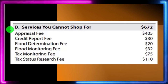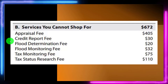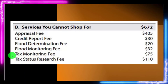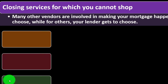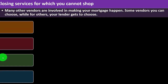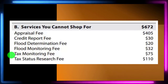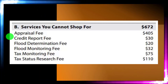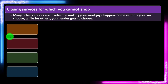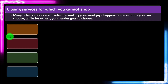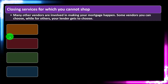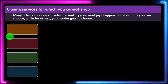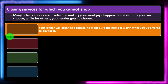Section B covers services you cannot shop for: the appraisal fee, credit report fee, flood determination fee, flood monitoring fee, tax monitoring fee, and tax status research fee. Many vendors are involved in making your mortgage happen; for some, your lender gets to choose the vendor. The lender wants assurance on items like the appraisal and credit report, which is why they prefer to hire vendors they trust, rather than letting the purchaser choose someone who might have a conflicting incentive.